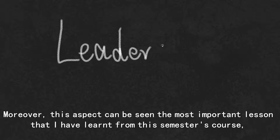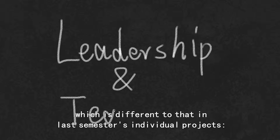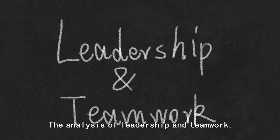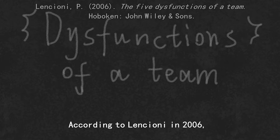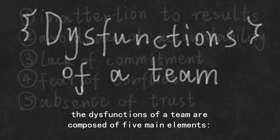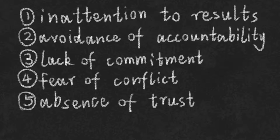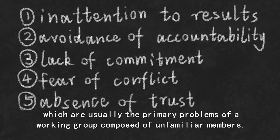Moreover, this aspect is the most important lesson I have learned this semester, which is different from last semester's individual projects: the analysis of leadership and teamwork. In fact, our cooperation did not go so smoothly. According to Lencioni in 2006, the dysfunctions of our team are composed of five main elements: inattention to results, avoidance of accountability, lack of commitment, fear of conflict, and absence of trust, which are usually the primary problems of a group composed of unfamiliar members.